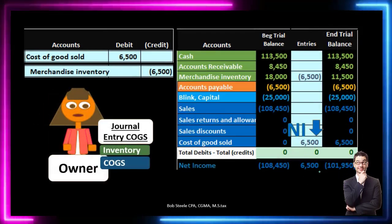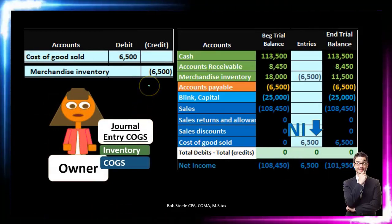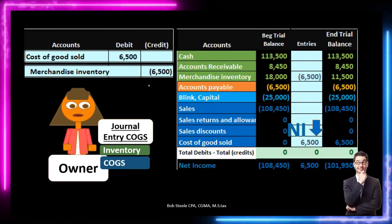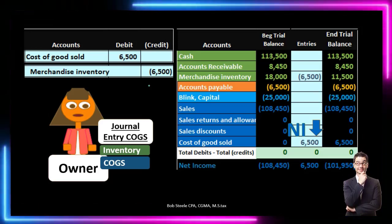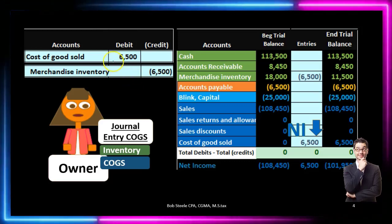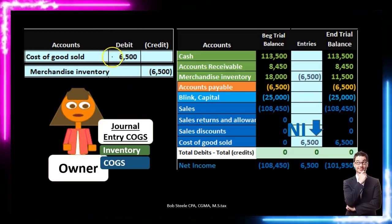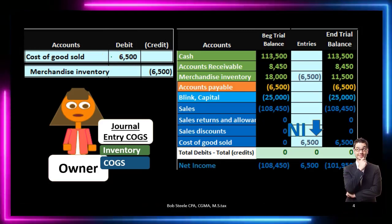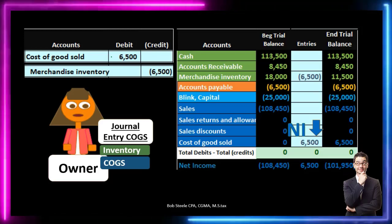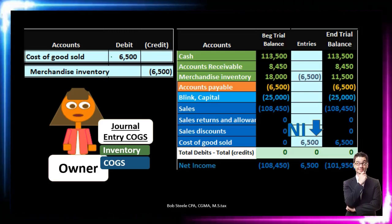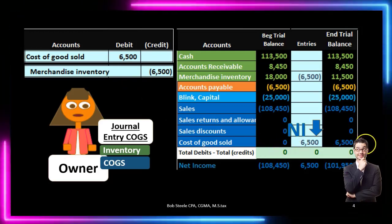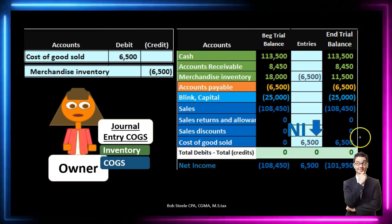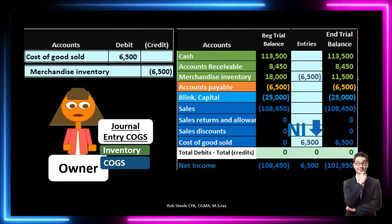The other side of that transaction is the reduction of inventory, because this is a merchandising company where inventory must be reduced. We credit inventory to make it go down and record the related cost of goods sold. That expense is related to consuming the inventory in order to generate revenue — something many students find confusing. Cost of goods sold increases, which decreases net income, and merchandise inventory goes down.